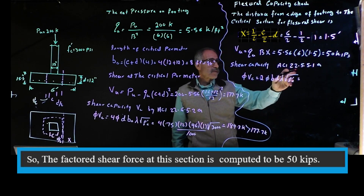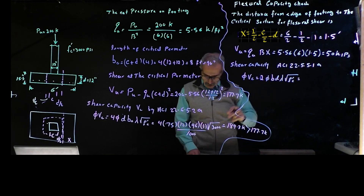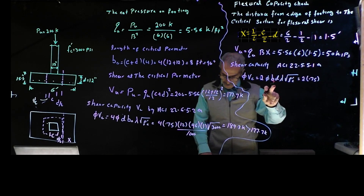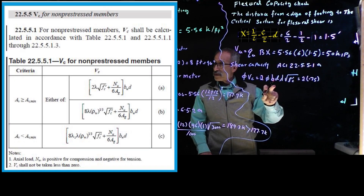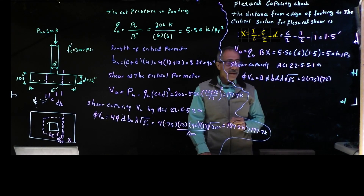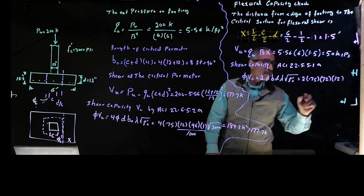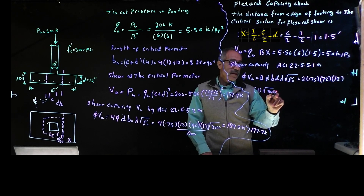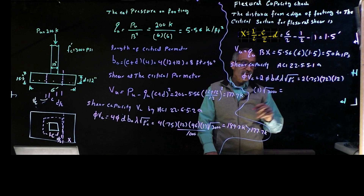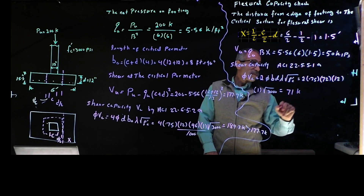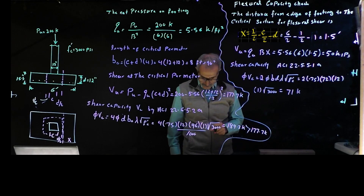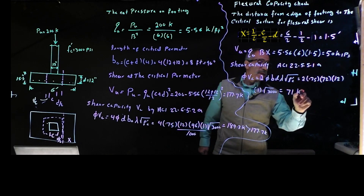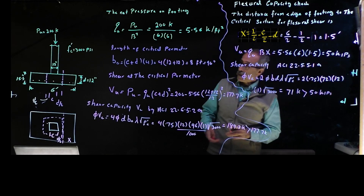The flexural shear capacity is given by the ACI equation. Plugging in: 2 times phi (0.75), times B of 72 inches, times D of 12 inches, times lambda of 1, times the square root of 3,000 psi, divided by 1,000 to convert to kips — that comes out to 71 kips. This is greater than the applied flexural shear of 50 kips, so the shear capacity in this section is adequate.